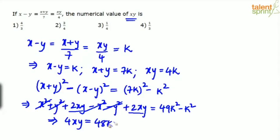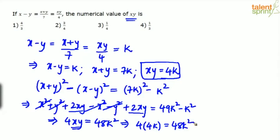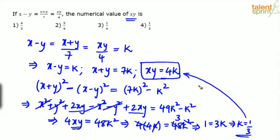We had obtained xy = 4k, so substitute: 4 × 4k = 48k². This gives 16k = 48k², so k cancels and 16 = 48k, meaning k = 1/3. Substituting back, xy = 4k = 4 × (1/3) = 4/3. The answer is option 1.